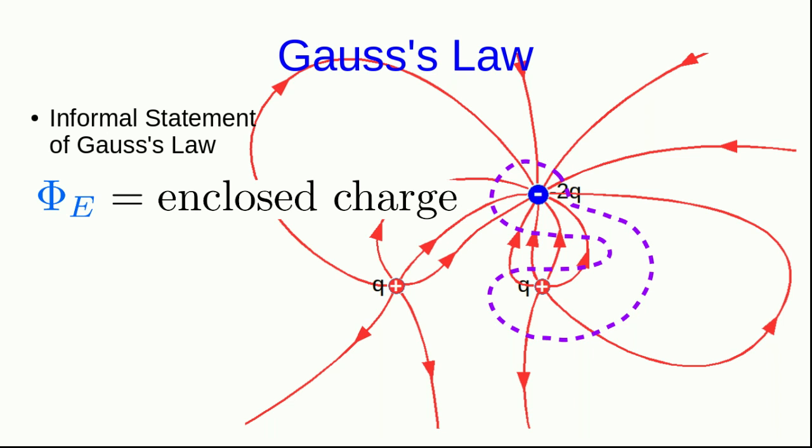And that largely comes down to thinking about units, so that we can get a charge in a useful set of units like Coulombs. But this informal idea of Gauss's law is really the better thing to understand in terms of the content of Gauss's law.